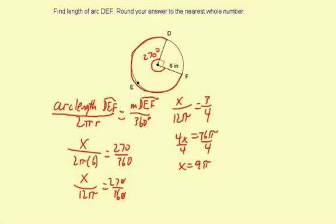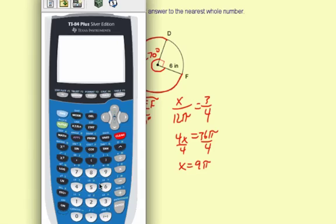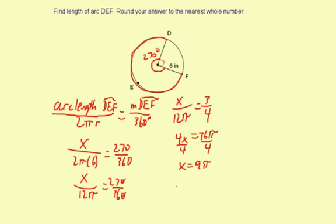So now I'm going to use a calculator to find a decimal for 9π. So 9 times 3.14, 28.26, or 28, rounded to the nearest whole number. And the units for the arc length are inches. It's because the units of the radius are inches, and it's the same units. So your answer is 28 inches.